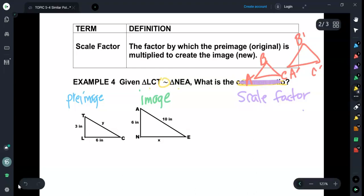L goes with N, so this angle and this angle go together. C goes with E, so these two angles are the same. And T goes with A, so these two angles are the same. So now I've got my image and my pre-image.